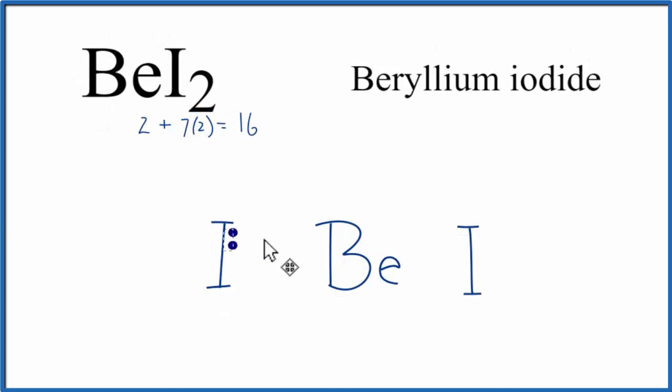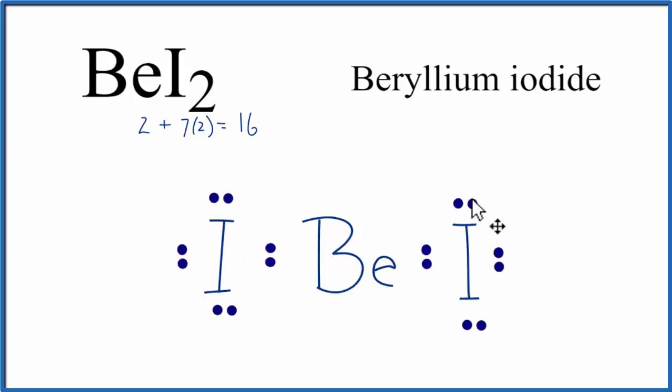Next, we'll place a pair of electrons between atoms to form the chemical bonds. And then we'll go around and complete the octets on the iodine atoms. At this point, we've used all 16 valence electrons.